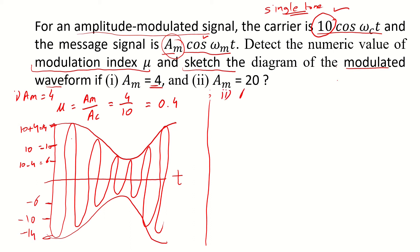In the second example we have an Am which is equivalent to 20. So this would indicate that the modulation index is equivalent to Am by Ac and that is 20 by 10. So this is equivalent to 2.